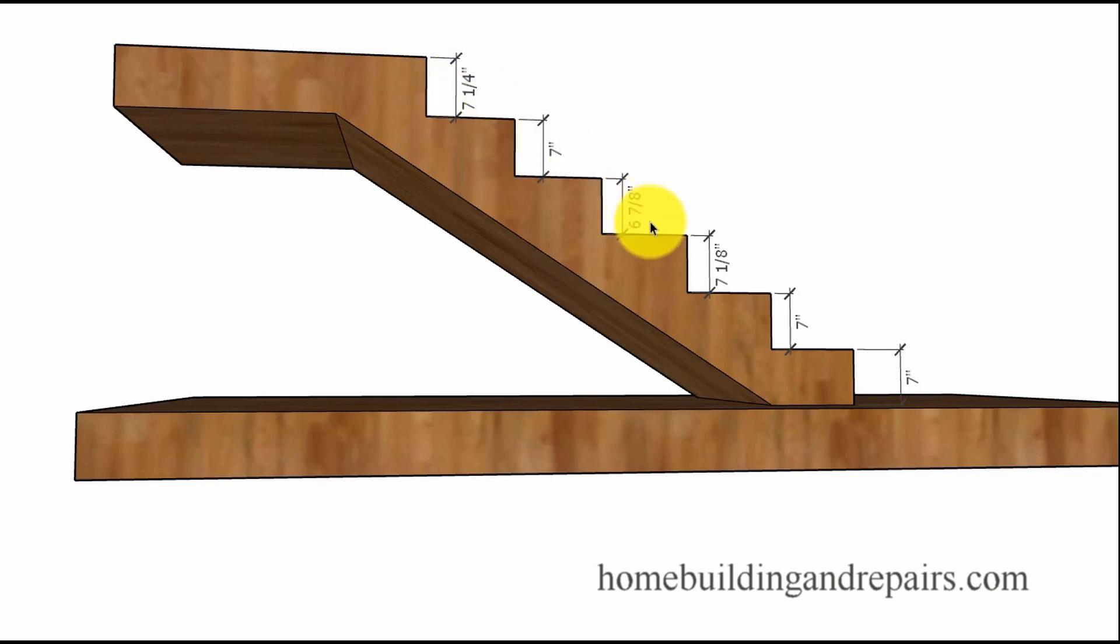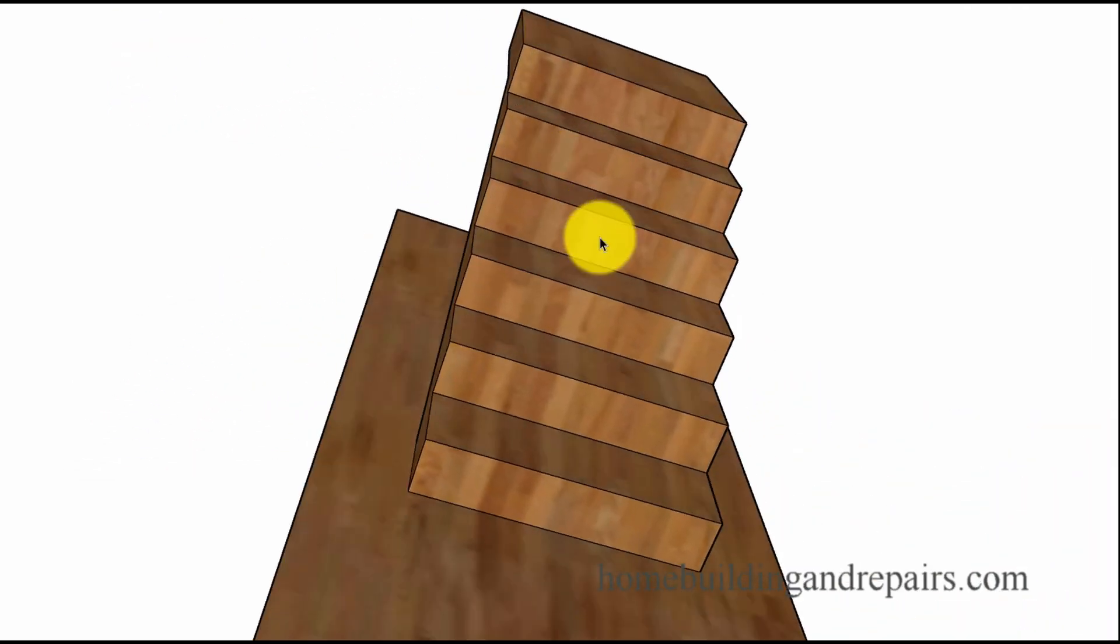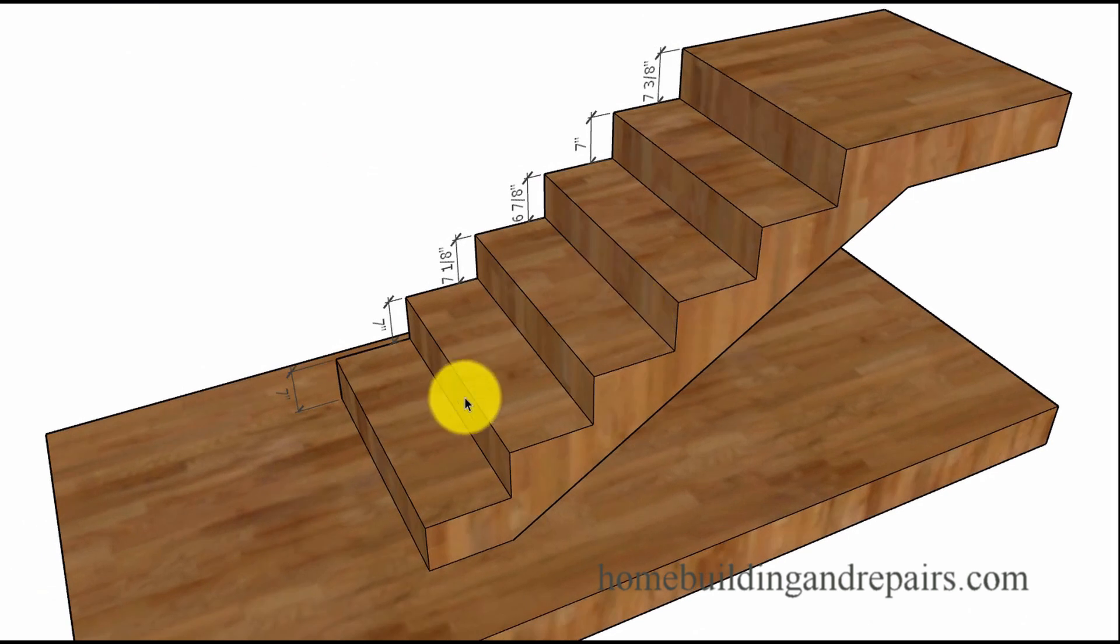However, if we raise this one to seven and three-eighths of an inch, we now have a half inch difference between the smallest and the tallest riser, and this of course would be a situation that wouldn't be acceptable to most building departments.